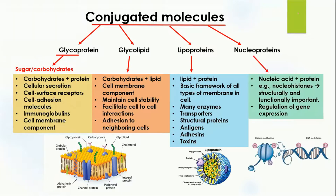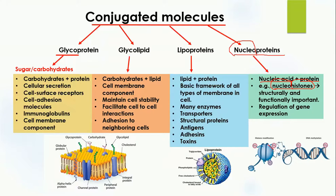The last but not least important conjugated molecule is nucleoprotein. Here 'nucleo' means nucleic acid, so nucleoprotein is formed when nucleic acid is joined with protein. The most important example is nucleohistones, which are present in the DNA, where histone proteins wrap nucleic acid around themselves. Here you can see this part is the histone, and on the histone this part is the DNA, which is wrapped around it.